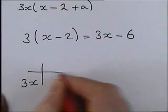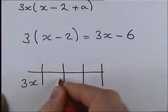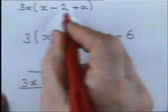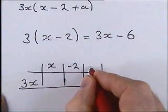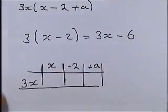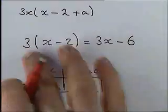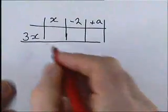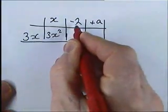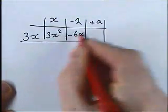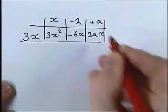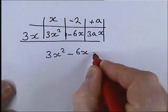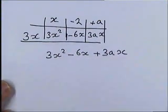For the next question I'll use the grid method. This is the first example with three terms in the bracket — instead of splitting the number into two bits, it's now split into three bits, so we make the grid one column bigger. The maths hasn't changed. Three x times x gives 3x², three x times negative two gives negative 6x, and three x times a gives 3ax.